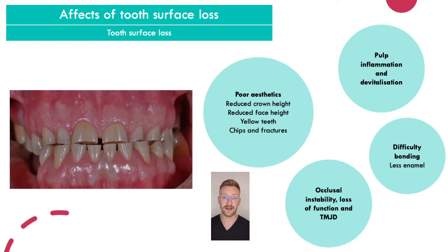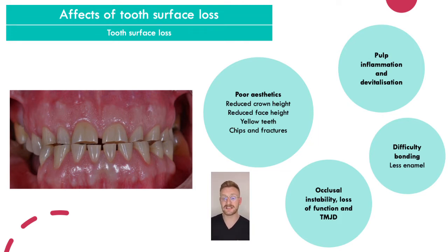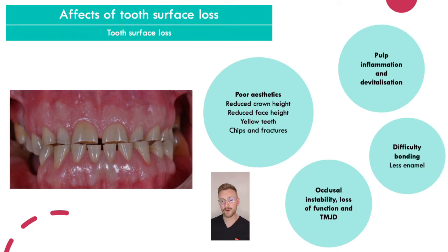The second most common complaint is dentine hypersensitivity. When enamel is lost, the exposed dentine tubules mean every cold drink causes a change in hydrostatic pressure in the tubules, irritating the nerve and producing a short, sharp pain. In more extensive, chronic, severe tooth wear, you can start to see reversible and irreversible pulpitis, and even pulp devitalisation. Changing the bite can also cause occlusion problems, mastication problems, loss of function, and TMJ problems.